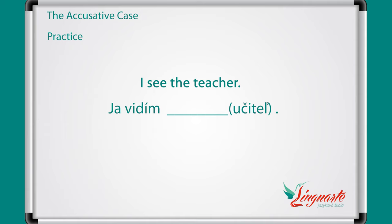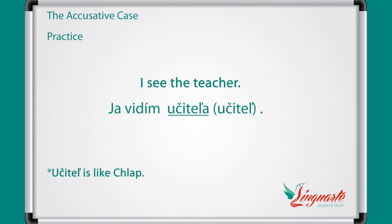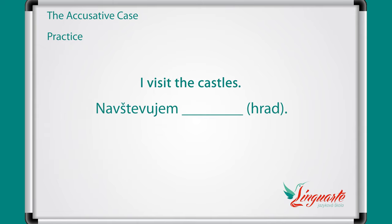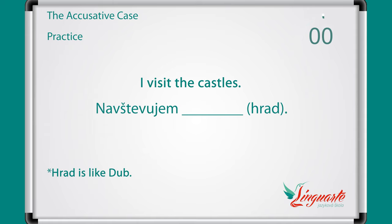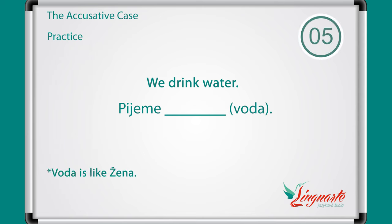I see the teacher — Ja vidím. Učiteľ has an accusative form like chlap. The answer is: ja vidím učiteľa. I visit the castles — Navštevujem hrad. Hrad has an accusative like dub. Answer: navštevujem hrady. We drink water — Pijeme. Voda is a noun like žena. The answer is: pijeme vodu.